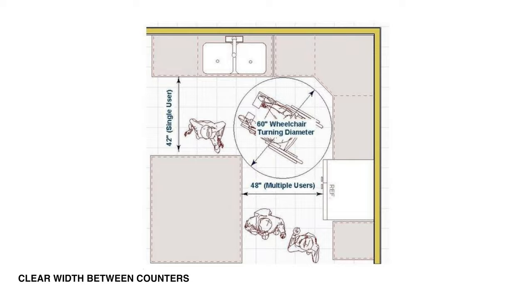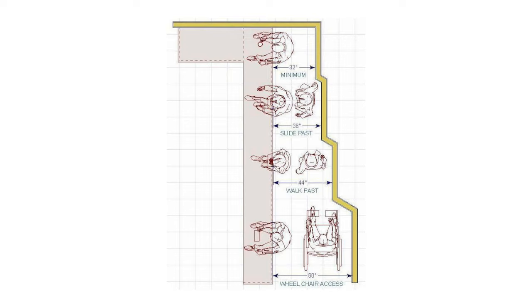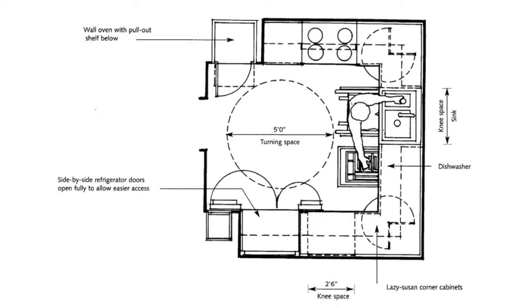If you have seating at an island, you'll want 60 inches of clear space behind the counter to allow someone to sit while someone else passes behind easily. In bathrooms, having ample space to turn around in a wheelchair is really important, and it would be ideal in a kitchen too. A five-foot turning circle refers to the clear floor space required to turn around in the room if you were sitting in a wheelchair, so that you don't have to back up and reverse out.